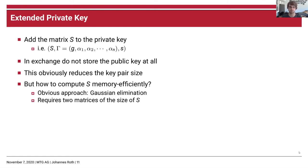For the previous algorithm to work, we need the matrix S. We propose storing S in the private key, calling this new private key the extended private key. In exchange for storing S, we do not need to store the public key at all — we can recompute it in a memory-efficient way. This approach reduces the key pair size, but we still need to generate S in a memory-efficient way, since requiring too much memory would again prevent computation on an embedded device.